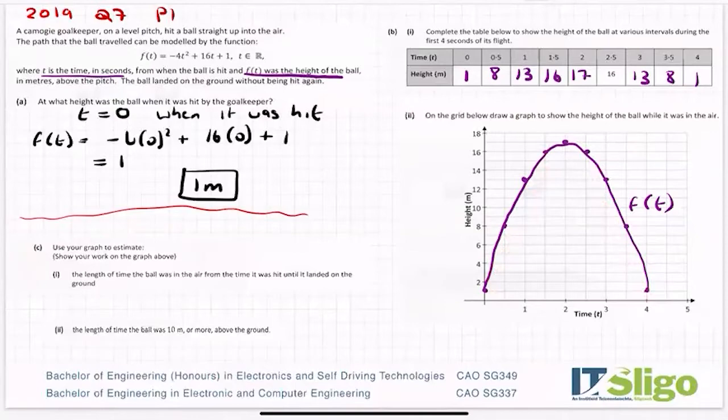Okay, C. Use your graph to estimate. And the reason I put C over here in the corner rather than a new page was because we're reading off the graph. And it says show your work on the graph above. And that's super important that you always show your what I call construction points on your graph. Show the length of time the ball was in the air from the time it was hit until it landed on the ground.